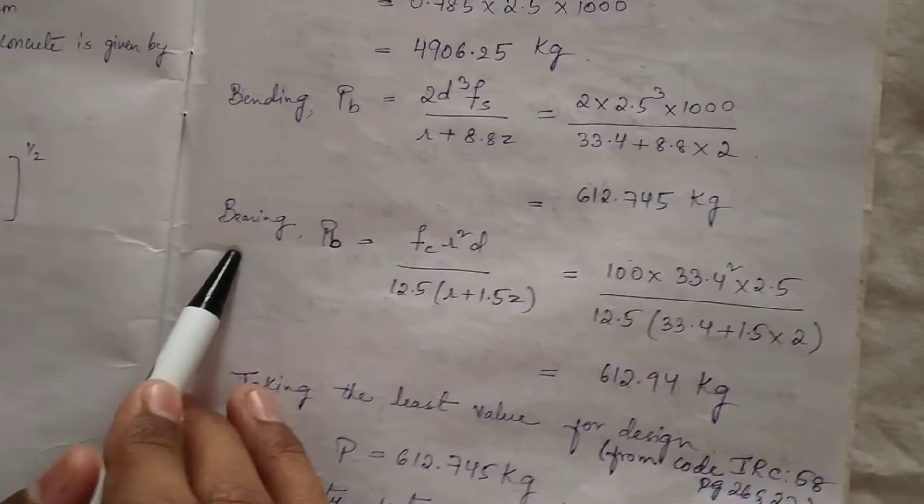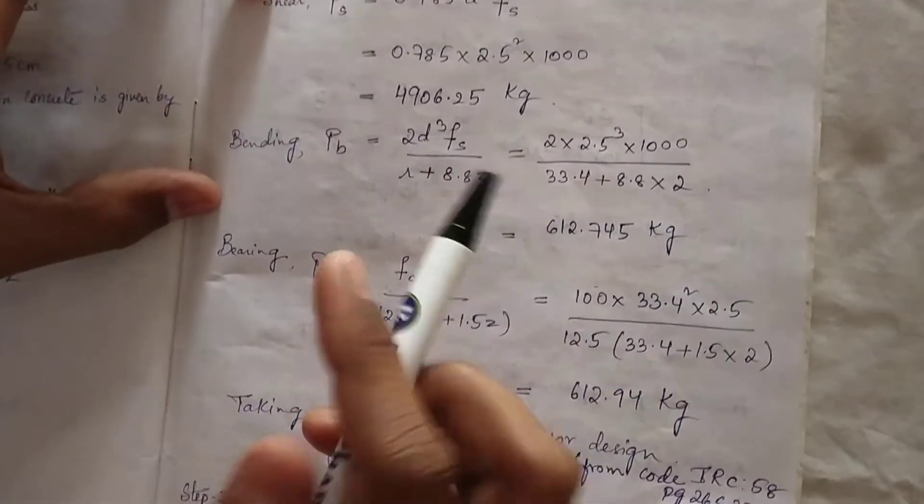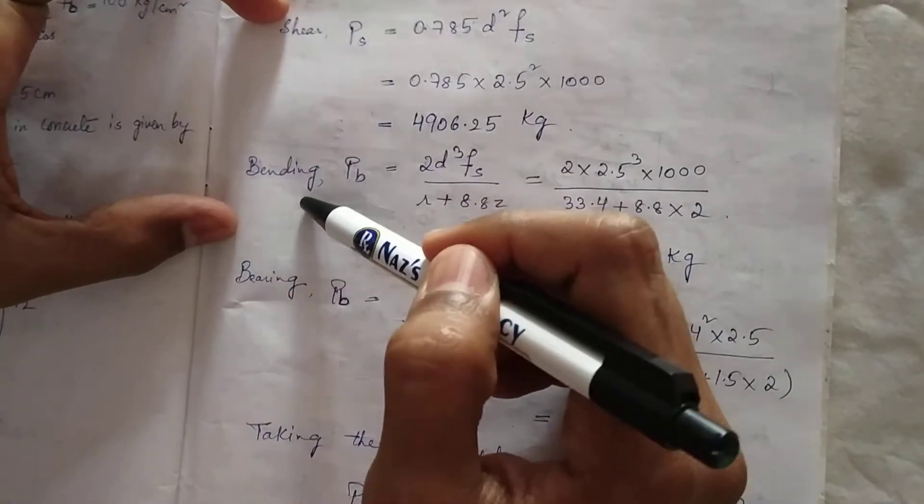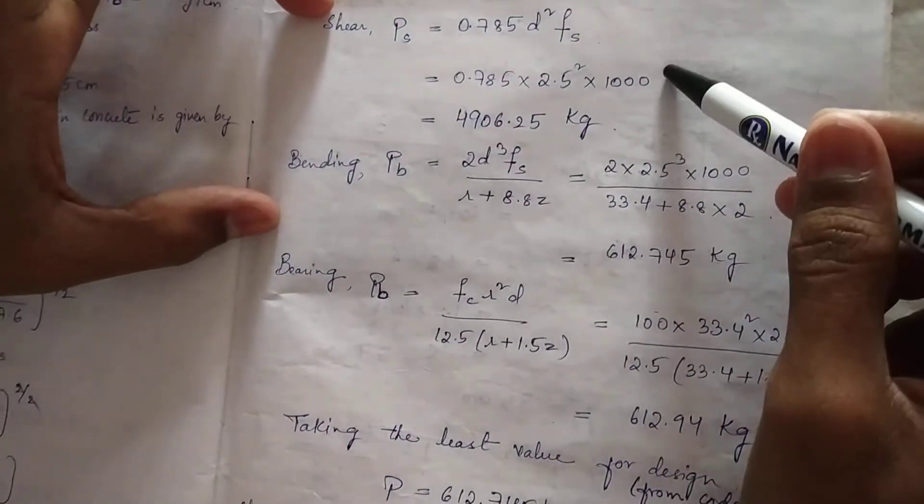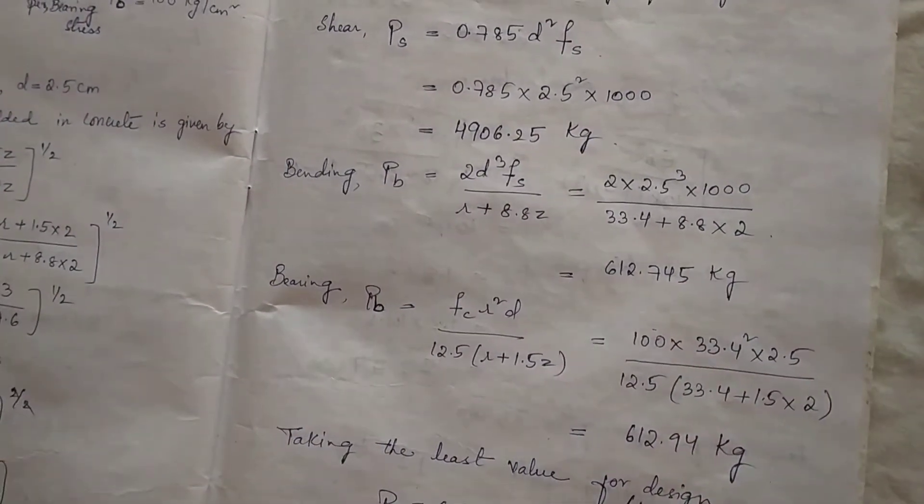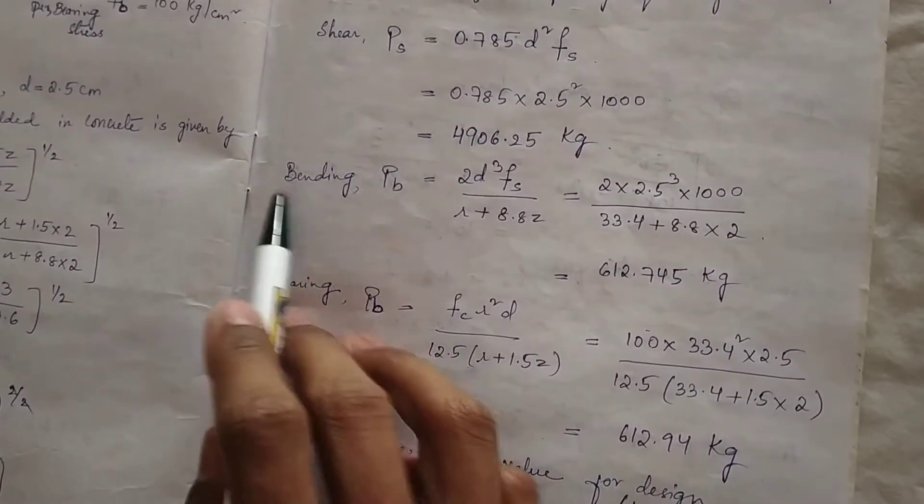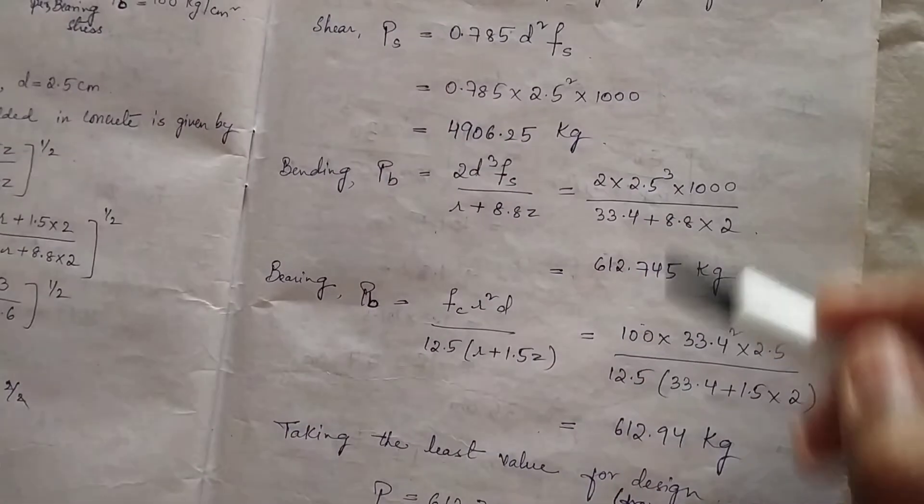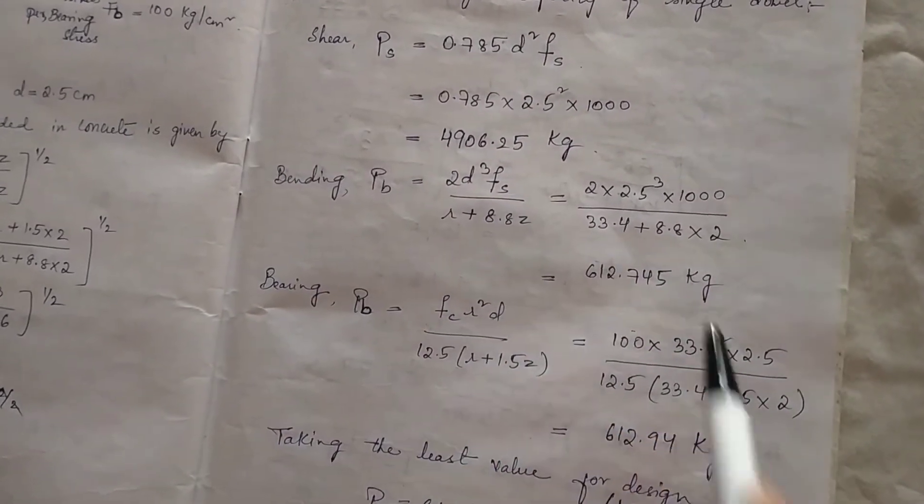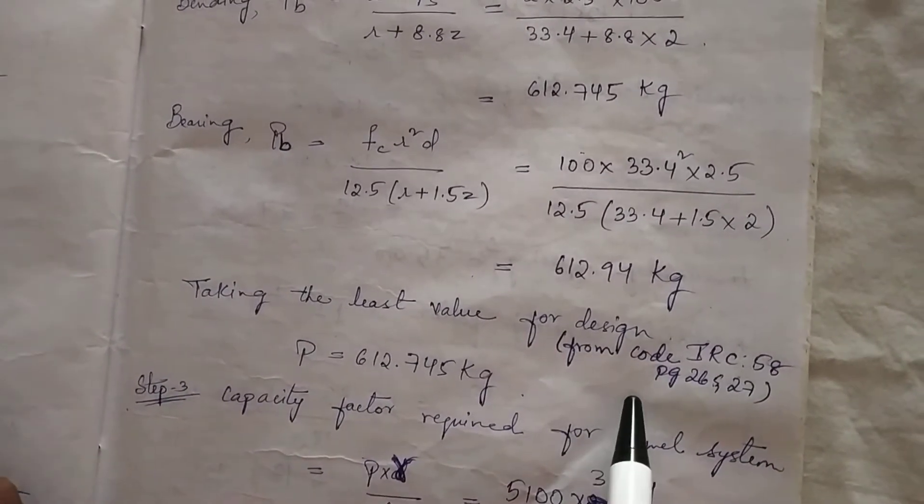So keep bearing load as a constant. We have to compare the load due to shear and load due to bearing. Which is less than the bearing load, we consider for the design of the dowel. In this comparison, we get the bending load as less than the shear and less than the bearing. So we are taking bending load as the value for design of dowel. If you want, you can refer page numbers 26 and 27 of IRC 58:2002.